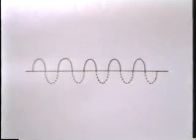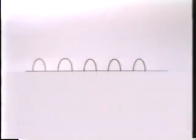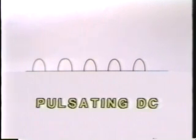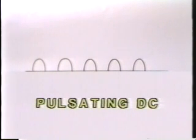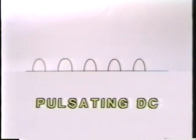The output of this half-wave power supply is a special kind of direct current called pulsating DC. It's not pure and constant like the DC from a battery, but instead actually drops down to zero volts and stays there for a full half cycle, or 1/120th of a second.